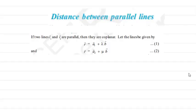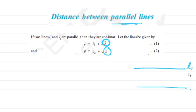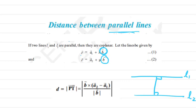Now let's see the distance between parallel lines. For two lines r = a1 + λb and r = a2 + λb (same direction vector b), the formula is: d = |b × (a2 − a1)| / |b|. Since the direction vector b is the same for both lines, we use just b instead of b1 × b2, while a2 − a1 remains the same.